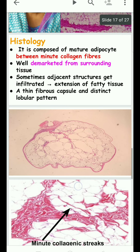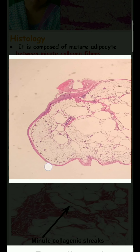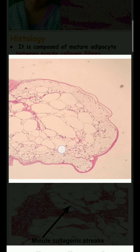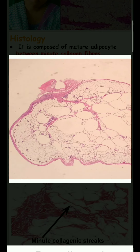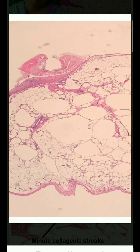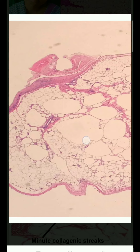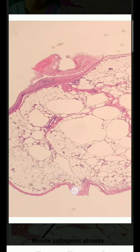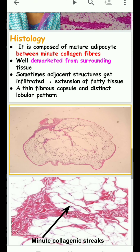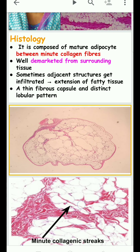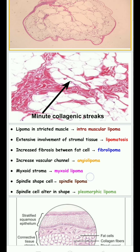Lipoma is well demarcated because it is surrounded by a thin fibrous capsule. A distinct lobular pattern is also seen — some lobules are large, some moderate, and some small. Sometimes adjacent structures get infiltrated, leading to extension of fatty tissue.